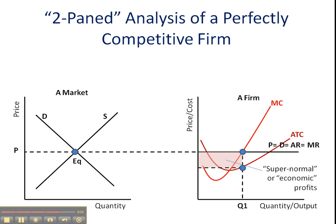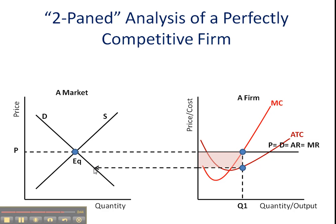This firm is earning a super normal profit, and other firms in the market are going to be aware of that, so they are going to come in. How many will come in? We take this normal profit line and transfer it back to the market, noting that it intersects our demand curve at a particular point. That's how many new firms are going to be entering the market, so our supply curve shifts from S to S2 at this point.